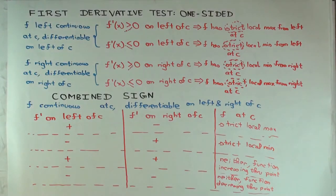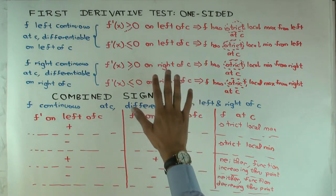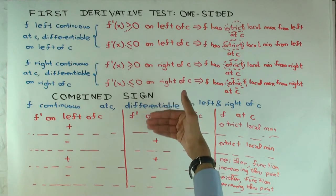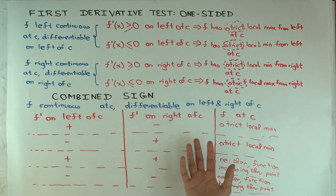So one more quick remark I want to make. That is, that the way this test is typically used is, we typically use this test at a critical point. So, the point c, to which we apply this test, is typically a critical point for the function. Which means, at the point, either the derivative is zero or, or what? At a critical, the derivative is either zero or doesn't exist. But, but the test actually, sort of, you don't need to assume it's a critical point for you to use the test.